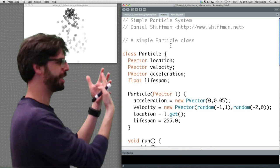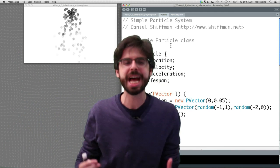They all have a location, velocity, and acceleration. They all fall with gravity. How could we do this?